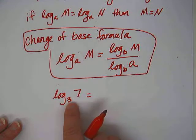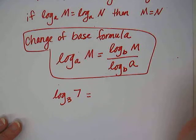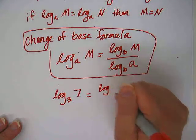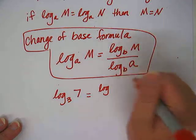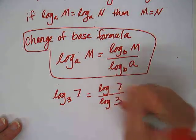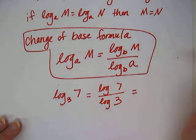But if I want to find an approximate answer with a decimal, then I can't do this in my calculator. I need to use the change of base formula and change it to base 10 or base e. So if I want to change this to base 10, I don't even need to write the 10. I just do log 7 over log 3.